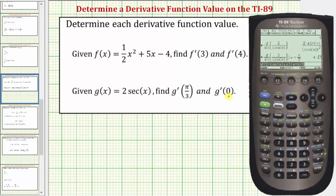Now to find g'(0), we need to change π/3 to 0. Press the right arrow, back arrow or backspace, 0, and then enter. g'(0) = 0. I hope you found this helpful.